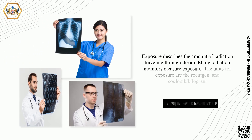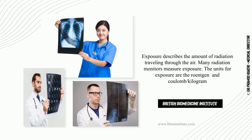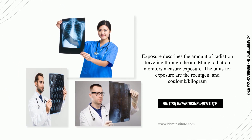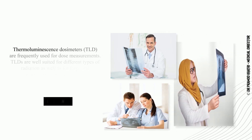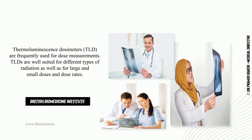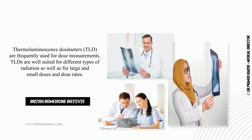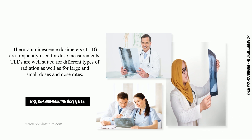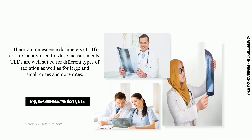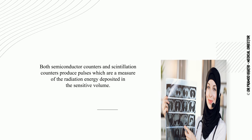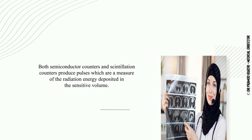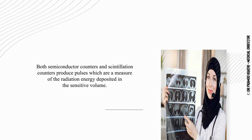Exposure describes the amount of radiation traveling through the air. Many radiation monitors measure exposure. The units for exposure are the roentgen and coulomb per kilogram. Thermoluminescence dosimeters, or TLD, are frequently used for dose measurements. TLDs are well suited for different types of radiation, as well as for large and small doses and dose rates. Both semiconductor counters and scintillation counters produce pulses which are a measure of the radiation energy deposited in the sensitive volume.